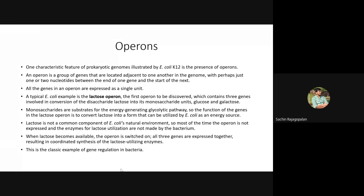Organisms normally break down polysaccharides, disaccharides, and oligosaccharides to the level of monosaccharides, because they act as substrates for energy-yielding pathways. The lactose operon expresses those enzymes responsible for converting lactose to glucose and galactose. Lactose is not a common component in E. coli's natural environment, so if you provide it with lactose, E. coli will take some time before it starts utilizing lactose — that is the lag phase — because it must first express the enzymes required for lactose metabolism.